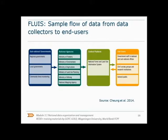This figure shows how data can flow from data collectors to end users. Data are collected by regional governments, local governments, and through community forest monitoring. The data are then transferred to national agencies for integration. The national agencies send data to the FLUIS for further integration and aggregation. From this central platform, the data can be accessed by end users, which could be government staff, civil society groups, research institutes, and the general public. They in turn may also contribute data back to the FLUIS.